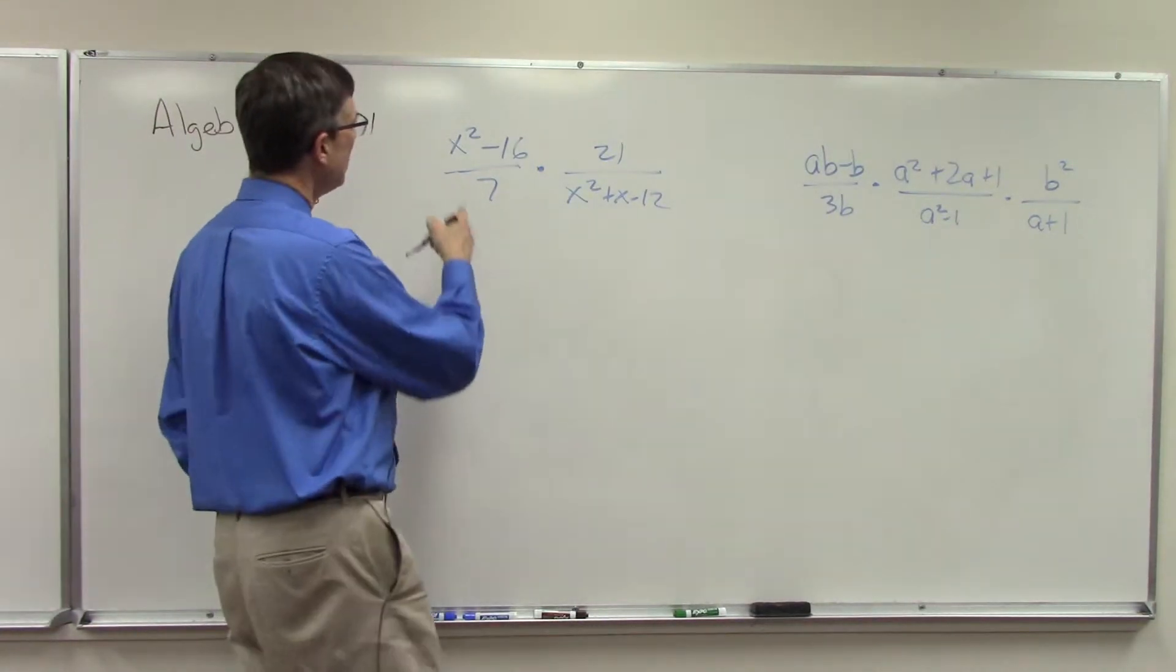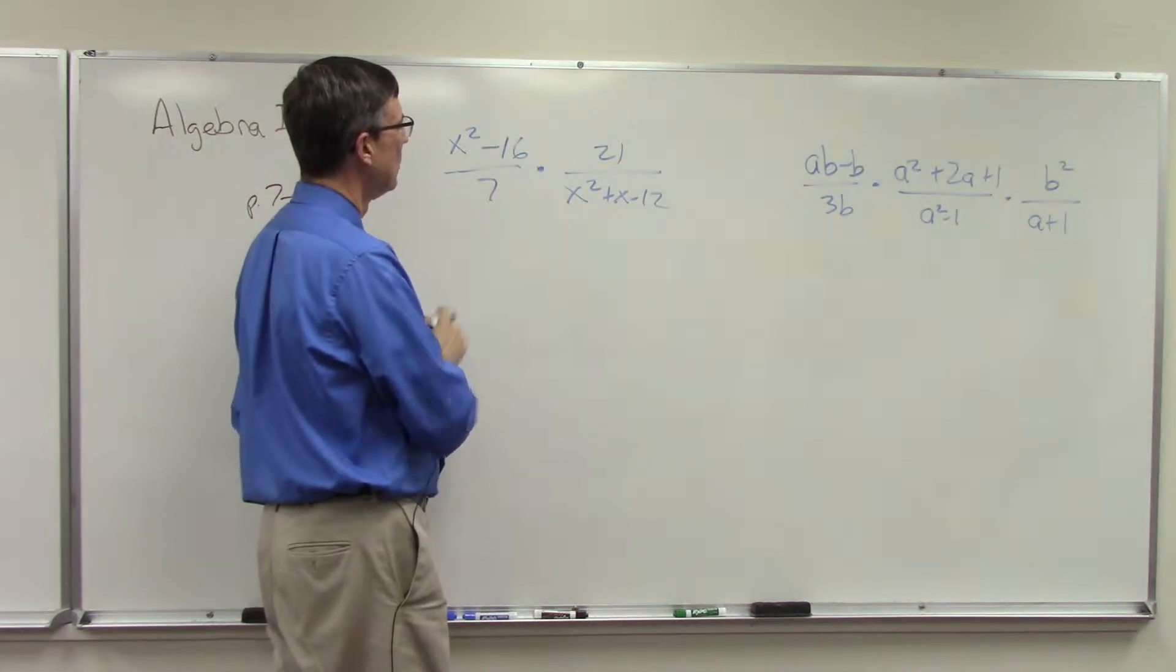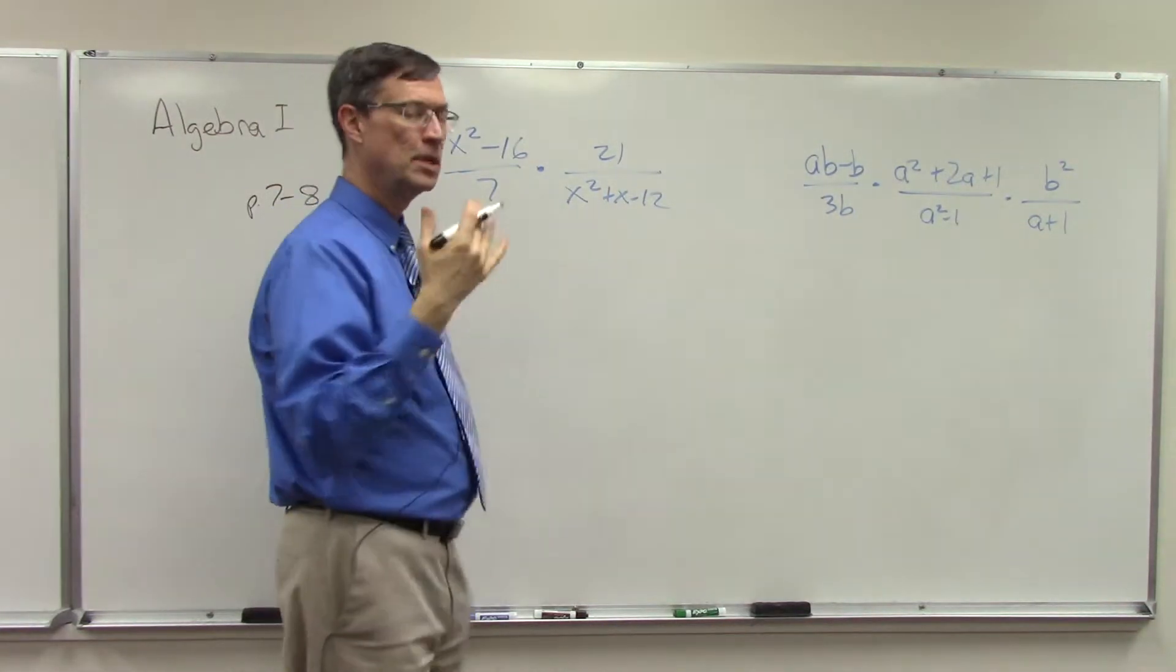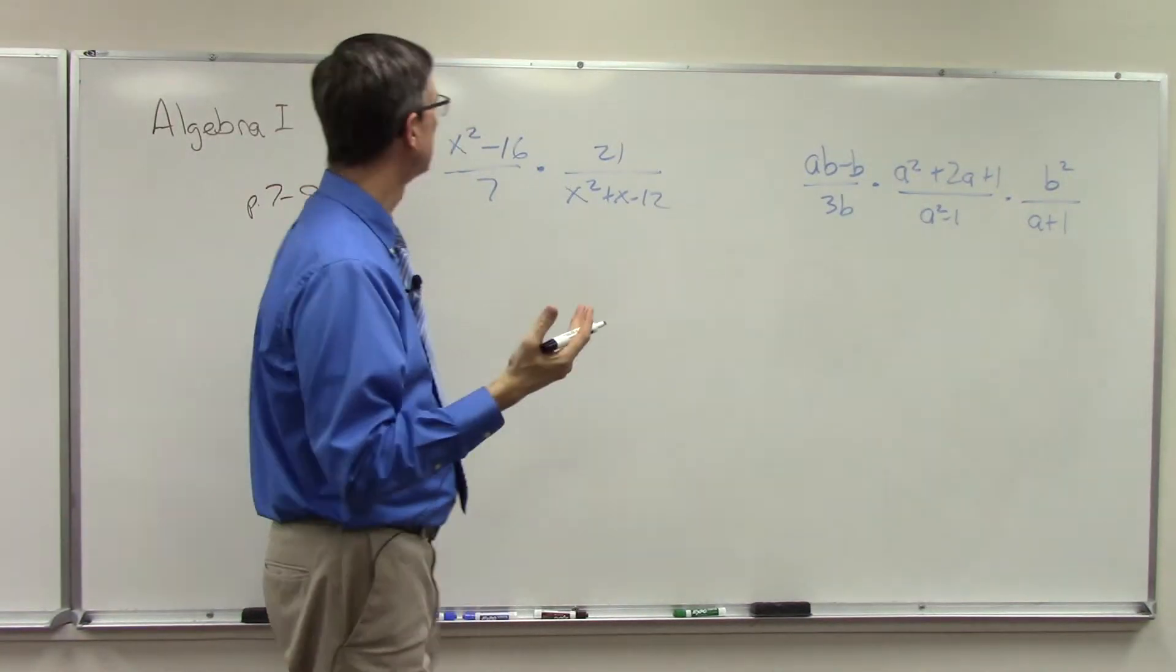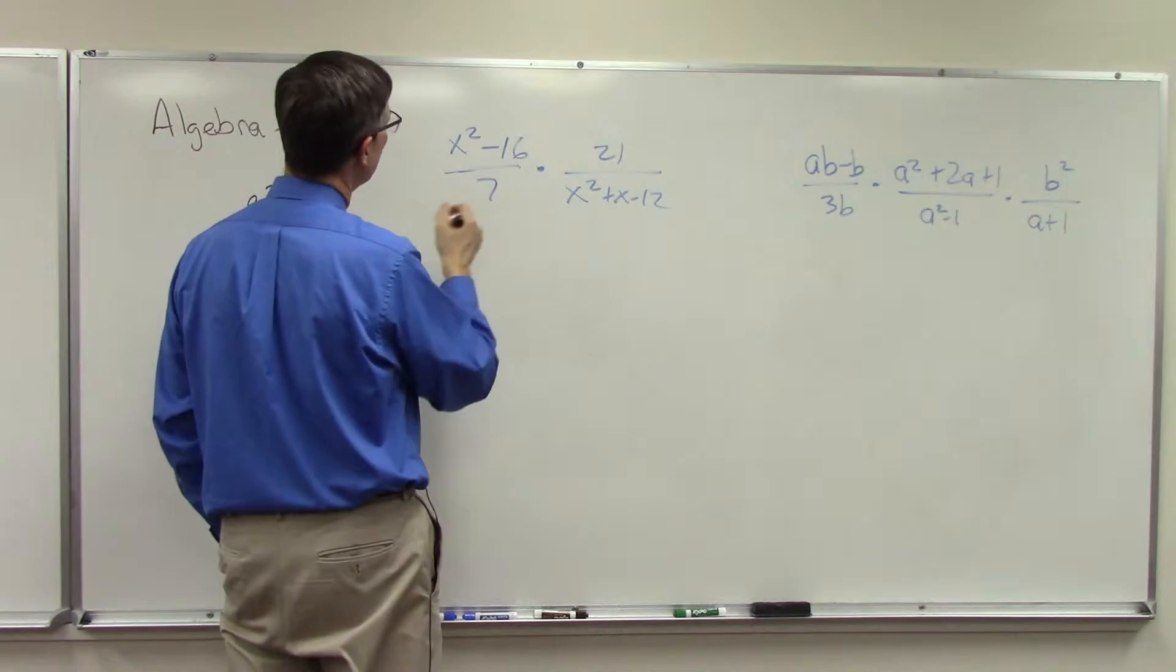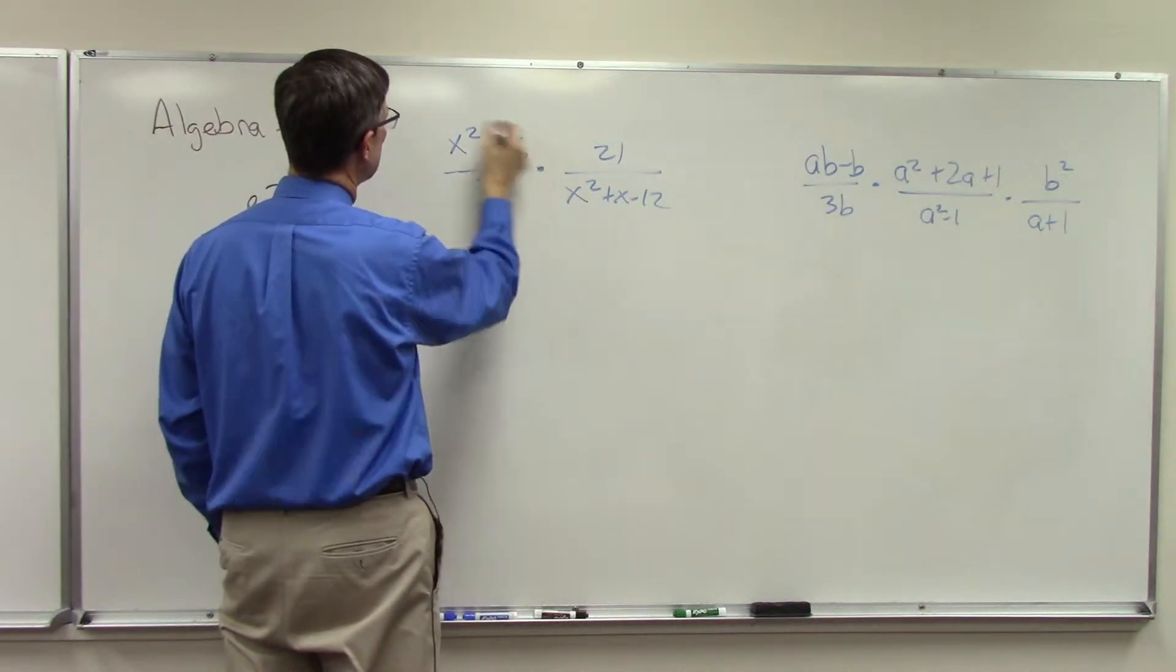Remember here we have the difference of perfect squares. Whenever we're doing one of these, first of all I look to see is there a common factor I can factor out, and then can I do reverse distributive property or do the foil method.